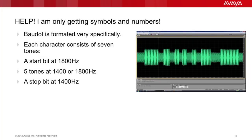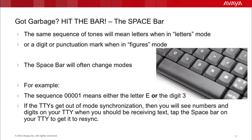A common problem you'll experience is getting only symbols and numbers on your display. The reason for this is because TTY uses Baudot encoding, formatted very specifically. Each character actually consists of seven tones: a start bit, five tones in the middle, and a stop bit. The five tones in the middle define what character is being sent. But this format will only deliver 32 unique combinations, which isn't enough to deliver the entire alphabet, the number set, as well as the symbols that are required.